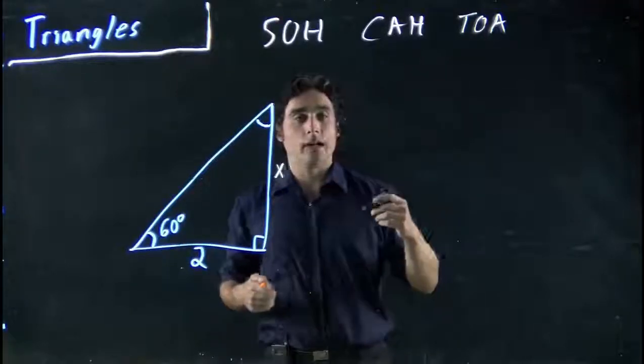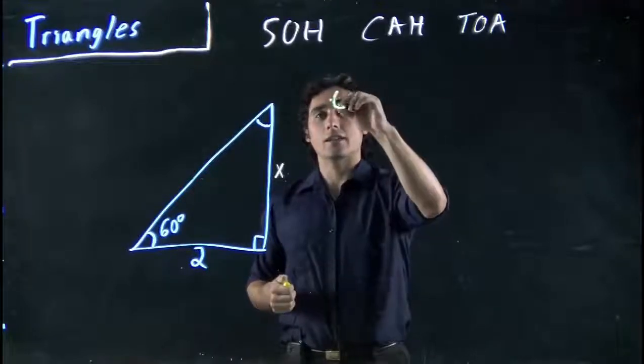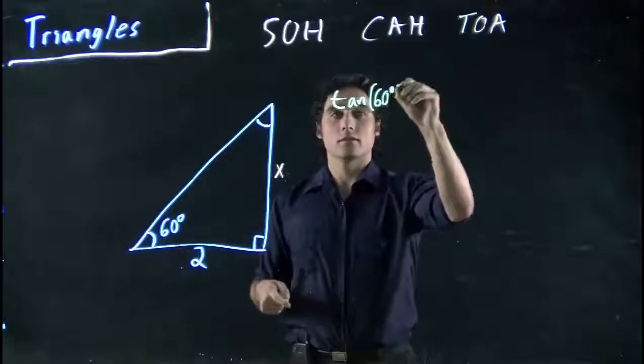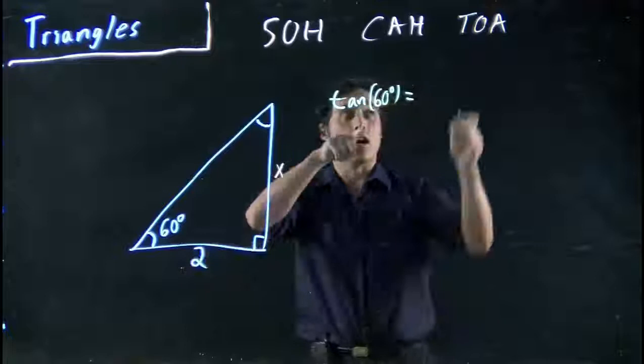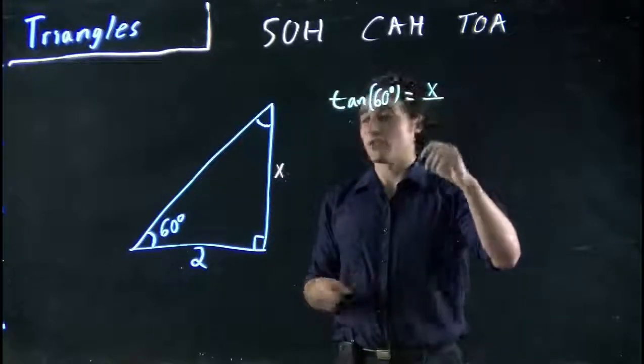According to this, I can write, in fact, I'll switch colors to keep it differentiated. I can write tan of 60, that's equal to opposite, TOA, opposite, in this case, X over adjacent, 2.